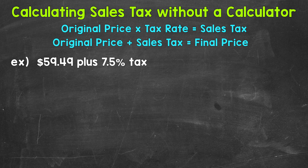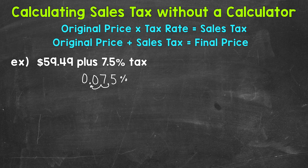Let's move our decimal twice to the left to change this to decimal form. I'm going to rewrite it underneath here so I have enough room. We have 7.5% sales tax. Let's divide that by 100, which we can do by moving the decimal once and then twice to the left. We fill the tenths place with a zero and put a zero in the ones place as well, since we do not have any whole numbers. So the decimal form of 7.5% is 0.075.